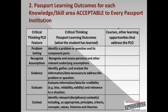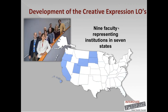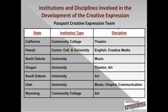Our team for creative expression was brought together from seven different states — California, Hawaii, North Dakota, Oregon, South Dakota, Utah, and Wyoming — and we met in Boulder for a two-day session to work on the PLOs, then met again later to work on the proficiency criteria. The team had representatives from both community colleges and universities, and discipline areas included theater, English, creative media, and music, among others.